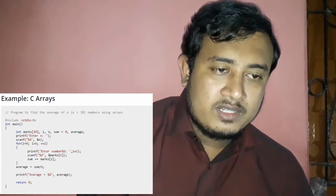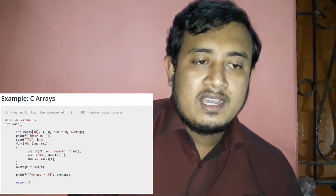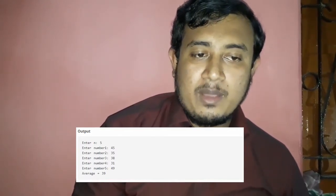Inside the loop, prompt the user to enter a number for position I plus 1, scan the input into array[I], and add it to sum. After the loop, calculate average as sum divided by N. Then print the average value. Thank you for watching my video.